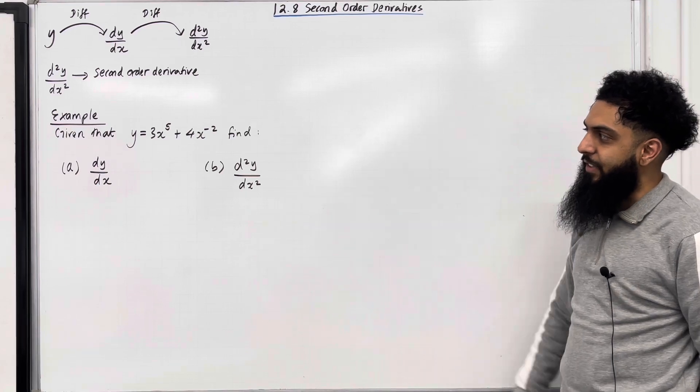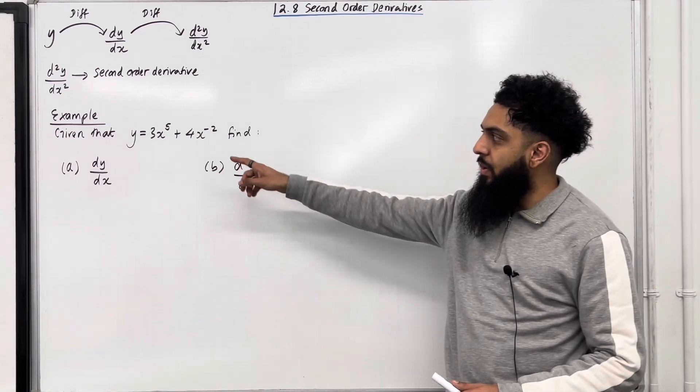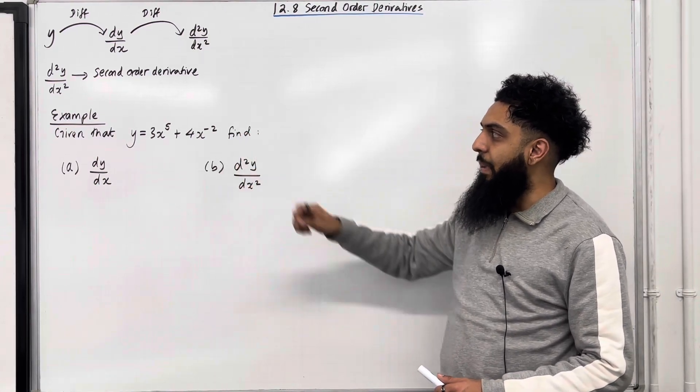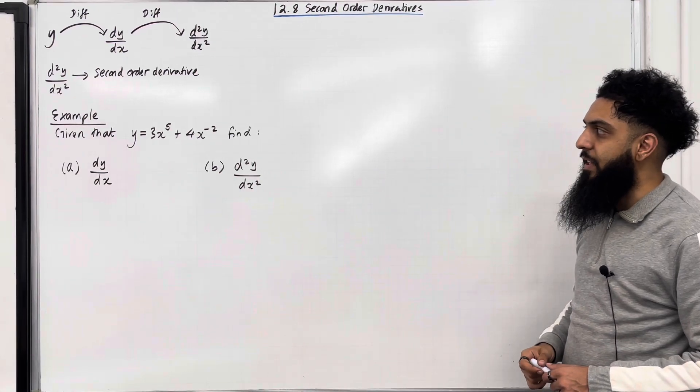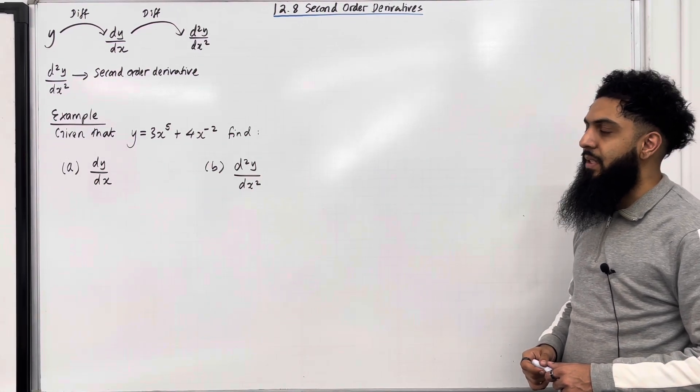Let's have a look at an example. Given that y is equal to 3x to the power 5 plus 4x to the power minus 2, find part A, dy over dx.